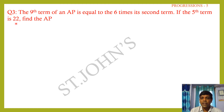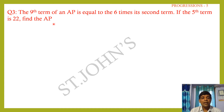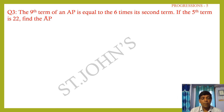Question number 4: The 17th term of an AP exceeds its 10th term by 7. Find the common difference. Given: 17th term = a + 16d; 10th term = a + 9d.